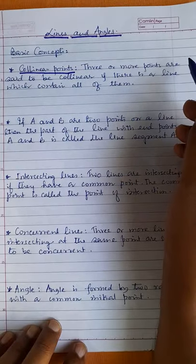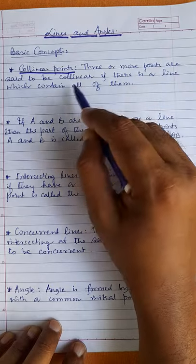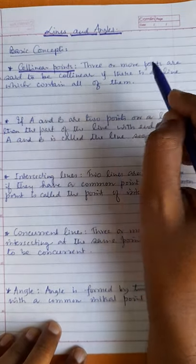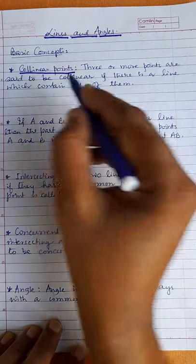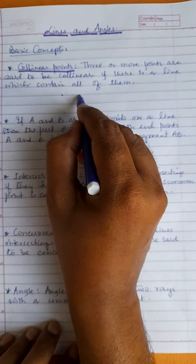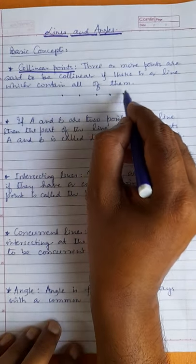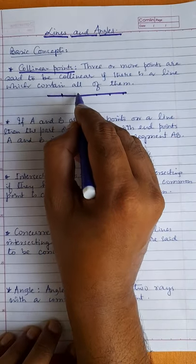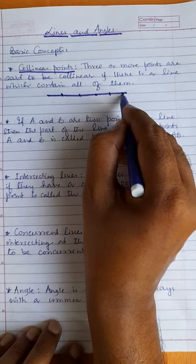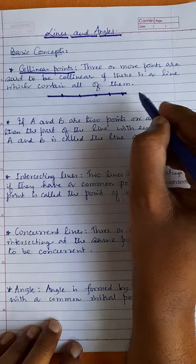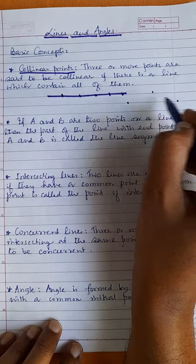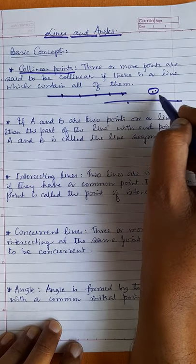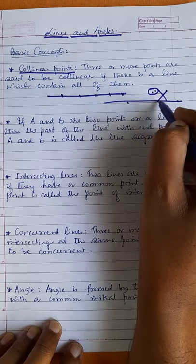Three or more points are said to be collinear if there is a line which contains all of them. Suppose we are taking three or more points — if all the points lie on the same line, these points are collinear points. But if a point is out of the line, these are not collinear points.